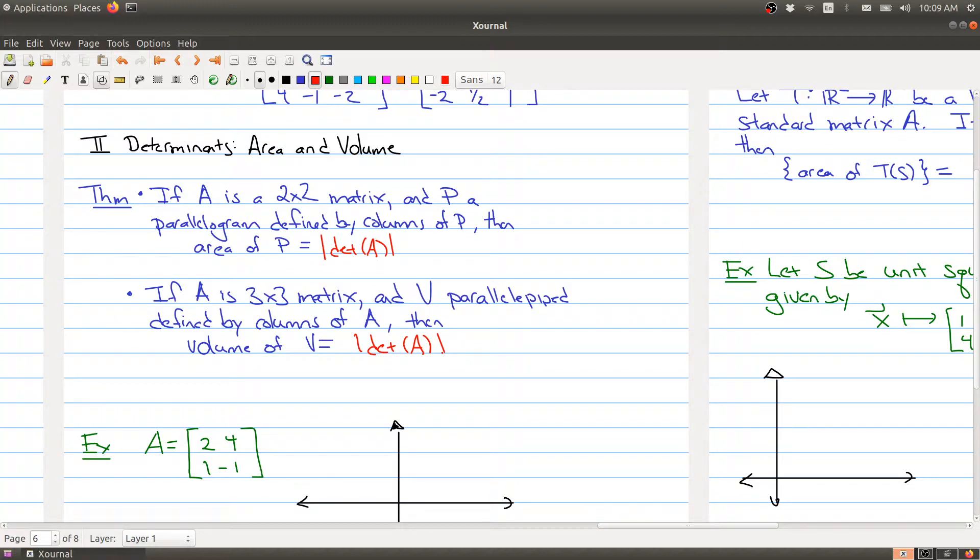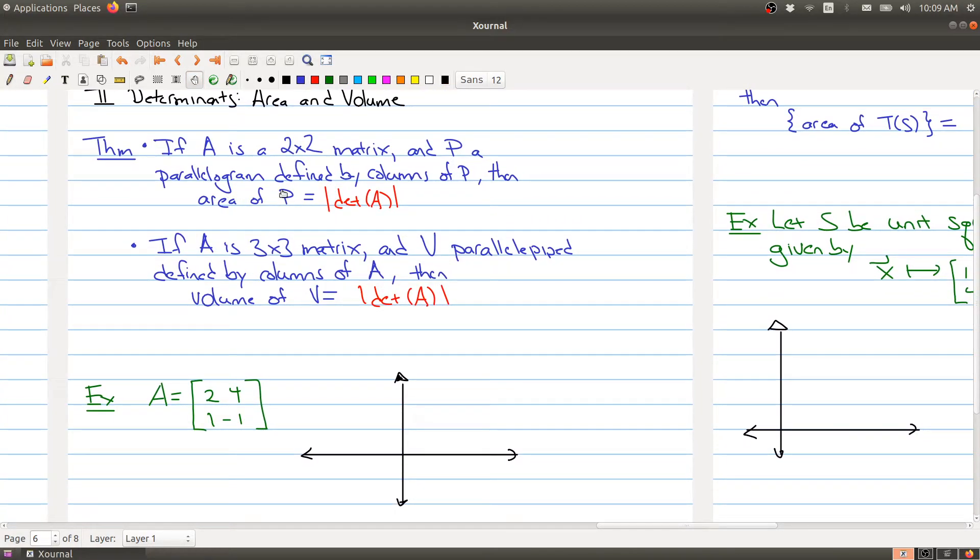And of course, this expands up into n by n, but it becomes a little hard to imagine what's happening in n-dimensional space. But basically, the determinant is a measure of the volume of that object. So just to kind of be a little bit clearer about what we mean by the parallelogram defined by the columns of P, here is a matrix with columns 2, 1 and 4, negative 1.